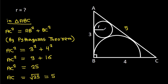Now, suppose the center of the circle is P and the center of the semicircle is Q, and BC is 4.